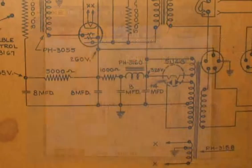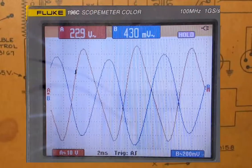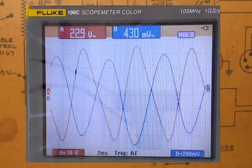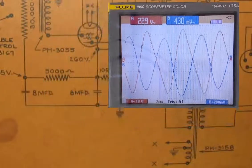So we can see as we went through the PI filter, our ripple has been reduced from 23 volts to 430 millivolts, which is about a factor of 50.